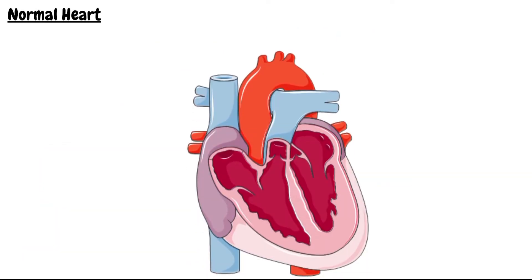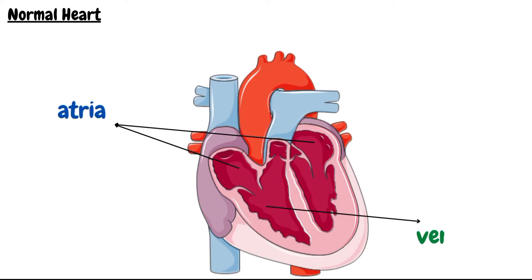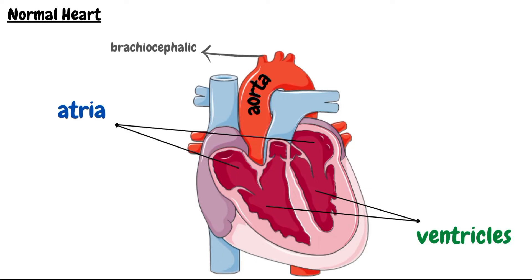In a normal heart, we have four chambers with two atria at the top and two ventricles down below. When ventricles contract, blood from the left ventricle is pushed into the largest artery of the human body, the aorta, which branches to ensure circulation of blood to the whole body. The branches of the aorta providing blood to the head and arms are the brachiocephalic artery, which divides into the right subclavian artery and the right common carotid artery, the left common carotid artery, and the left subclavian artery.